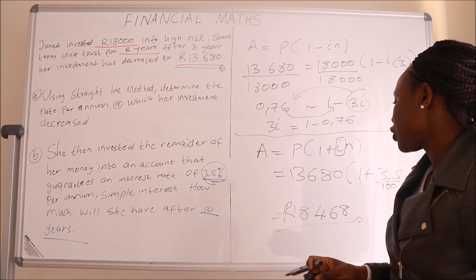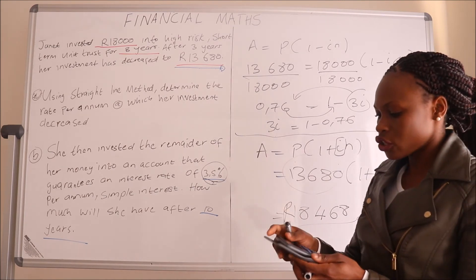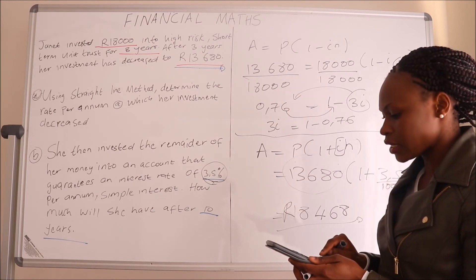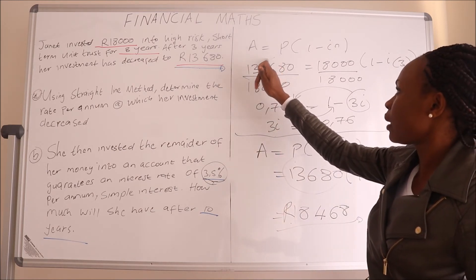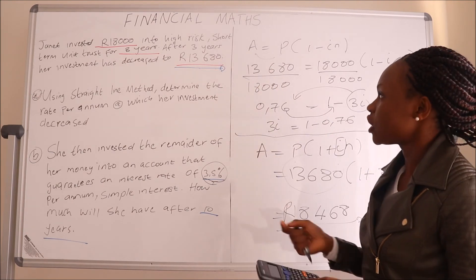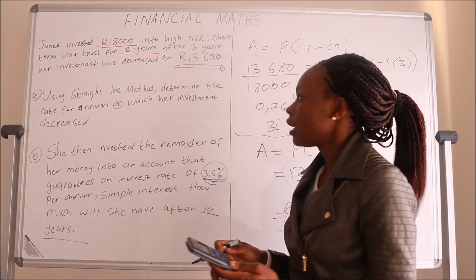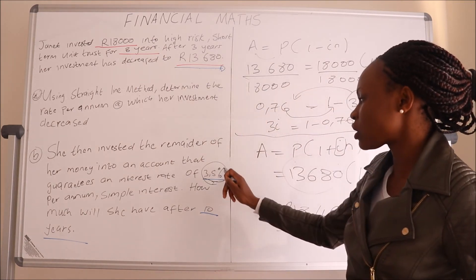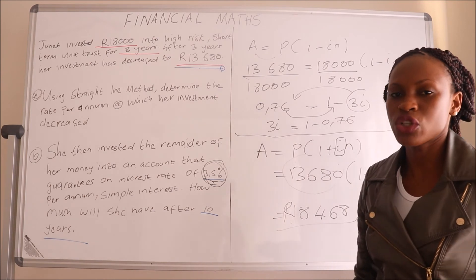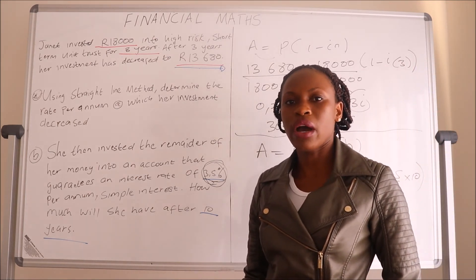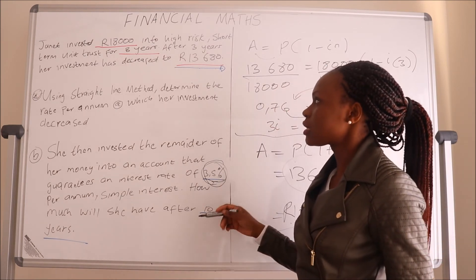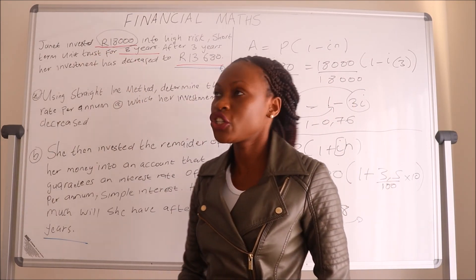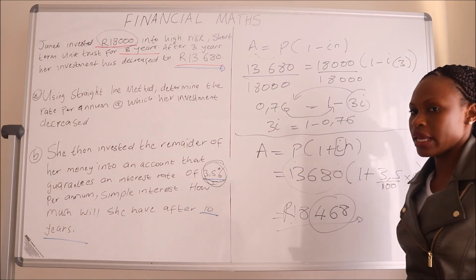After ten years her investment increases from thirteen thousand six hundred and eighty to eighteen thousand four hundred and sixty eight. We can find out how much she gained by subtracting the principal from the final amount, which gives four thousand seven hundred and eighty eight. Because her interest rate is only three point five percent, she won't gain a lot even over ten years, but at least she gained rather than lost. Her final amount even exceeds her original eighteen thousand by four hundred and sixty eight.